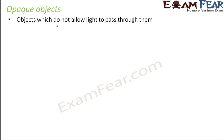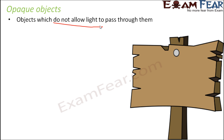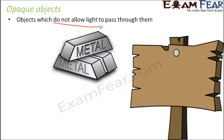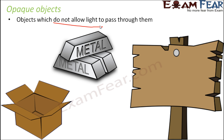The third category is opaque objects. These do not allow light to pass through them at all, so you will never be able to see anything on the other side. For example, a block of wood, a metal door, or a wooden door — you cannot see anything present on the other side. A cardboard box is also opaque; if it is closed, you will not know what's inside.